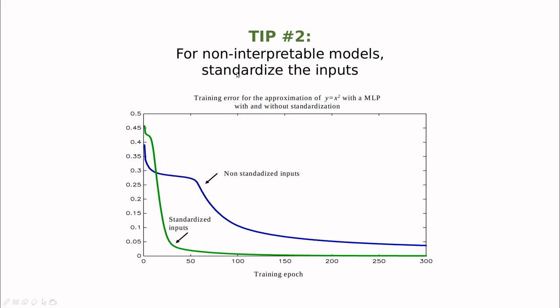So one very simple tip is in order to reduce maximizing the effect of random initial conditions, you should standardize the inputs or change the range of variability of the input from zero to one for all the numerical variables.